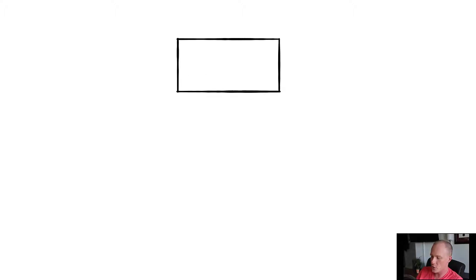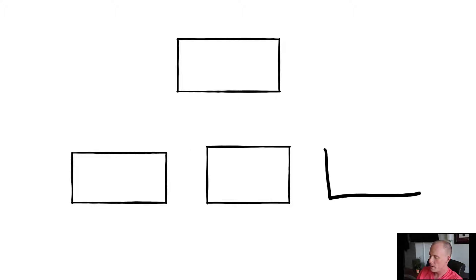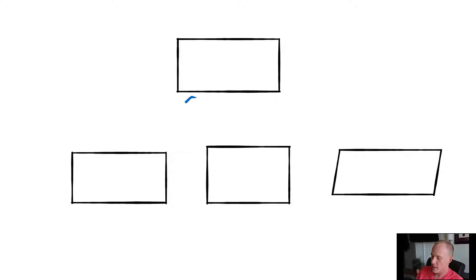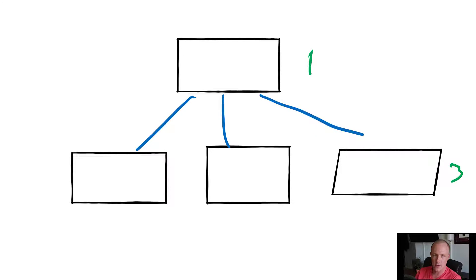We'll head over to the whiteboard. A one-to-many relationship looks like this: we have one parent entity at the top and many child entities at the bottom — in this case three, although when building an application the exact number isn't terribly important, as long as the application is built to handle this relationship, whether you have three, four, or more.